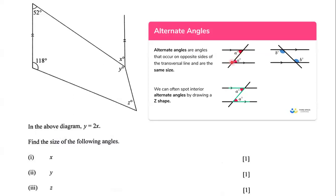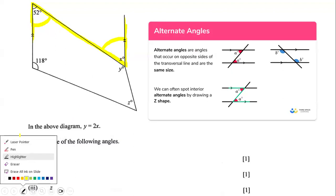We have the Z shape here as well. If we want to spot alternate angles, we just have to use a Z shape. Looking at the diagram, we have the Z shape: this right here, then this, and then this. So what can we say about this angle that measures 52 degrees and this angle x? Well, we have the Z shape, and indeed these two angles are alternate angles.